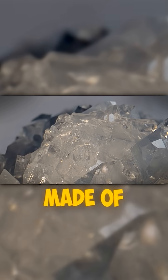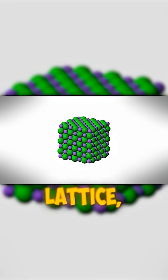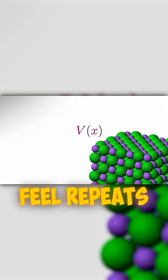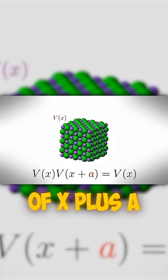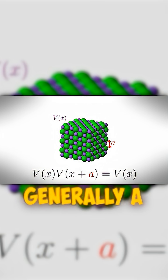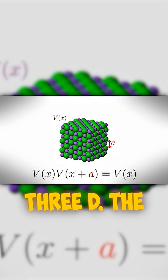Bloch's theorem. A crystal is made of atoms arranged in a periodic lattice, meaning the potential energy V of X that electrons feel repeats regularly. V of X plus A equals V of X, where A is the lattice spacing, or more generally, a lattice vector in 3D.